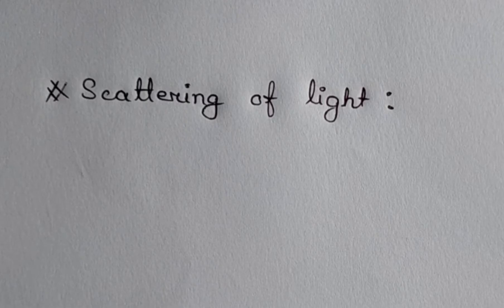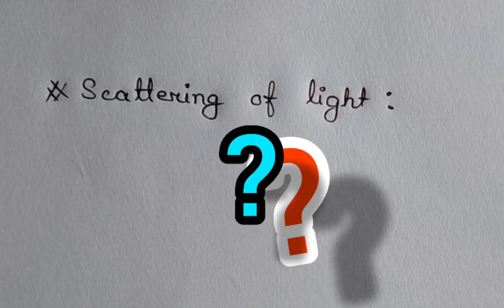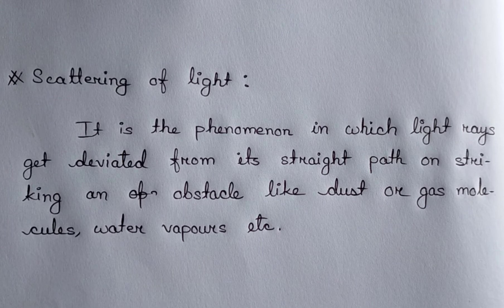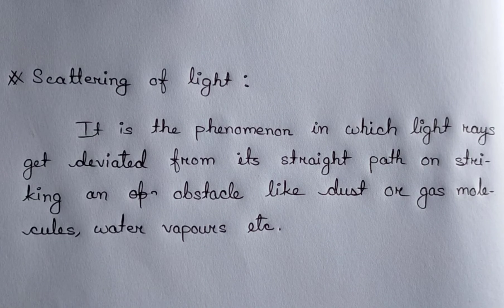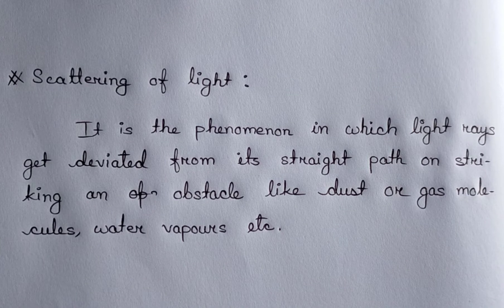What is scattering of light? Scattering of light is the phenomenon in which light rays get deviated from its straight path on striking an obstacle like dust or gas molecules, water vapors, etc.